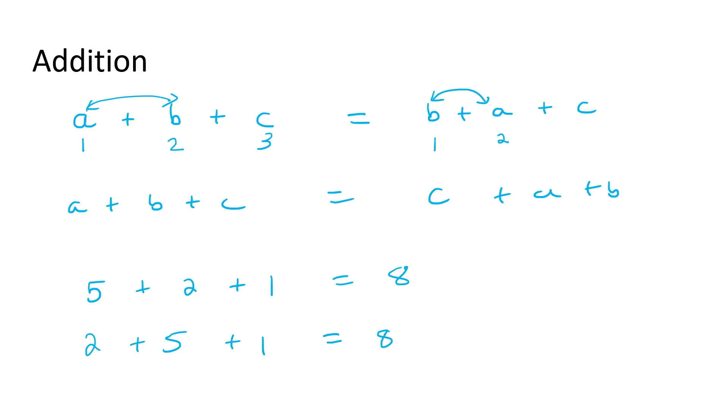And so what we are now saying is that when you are busy with addition, when you're adding numbers together, if you move one of them or two of them or three of them, the answer will remain the same because of this amazing thing called the commutative property of addition.